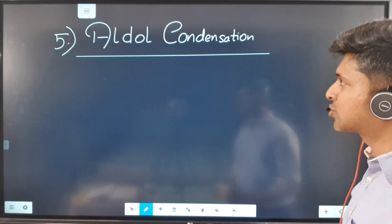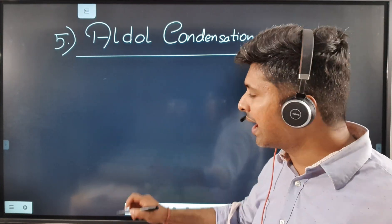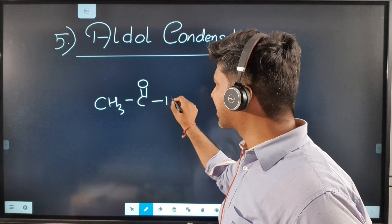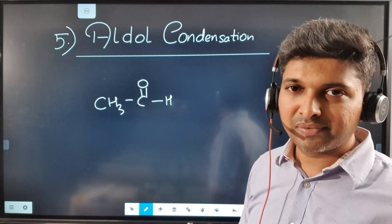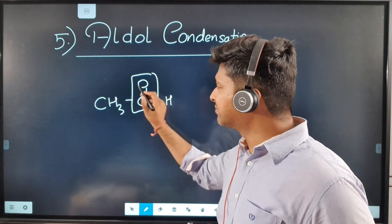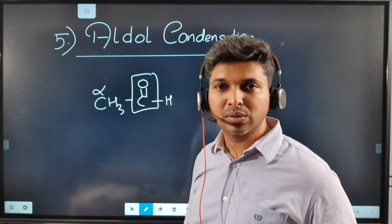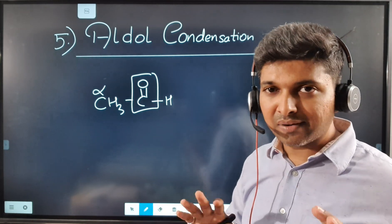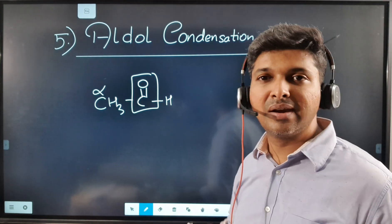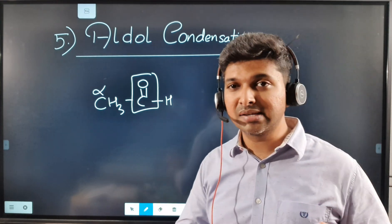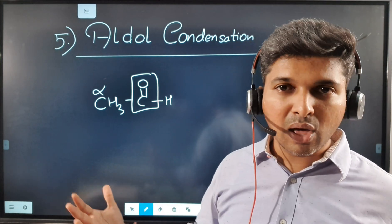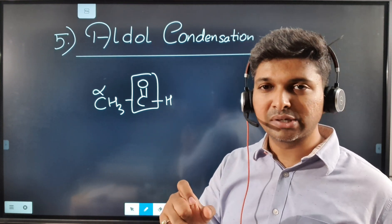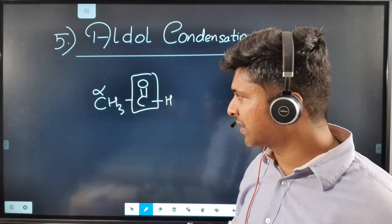Let's move on to aldol condensation. Aldol condensation is possible only if at least one of your reactants has an alpha hydrogen. The alpha carbon is the carbon next to the carbonyl carbon, and the hydrogen attached to the alpha carbon is called the alpha hydrogen. If both reactants do not have an alpha hydrogen, aldol condensation will not take place — instead, the Cannizzaro reaction takes place with 50% NaOH. Aldol condensation requires dilute NaOH.